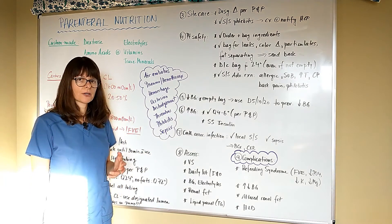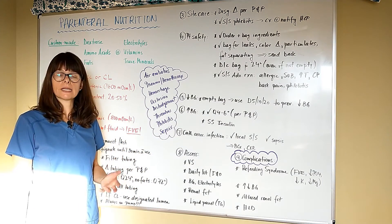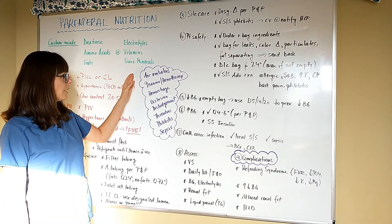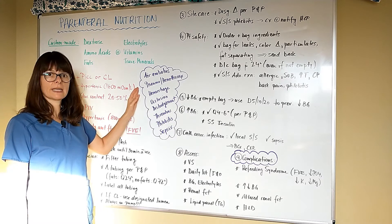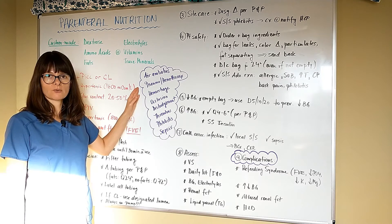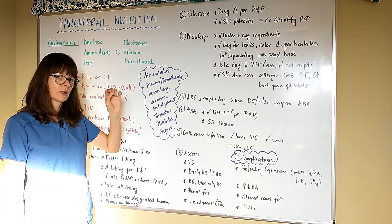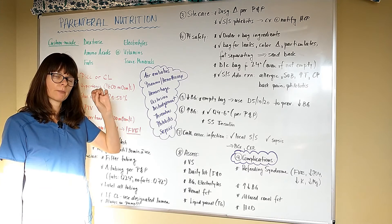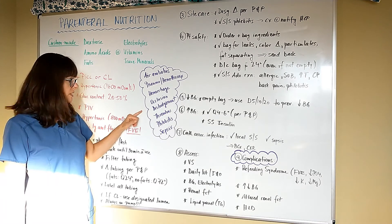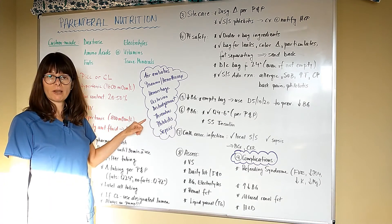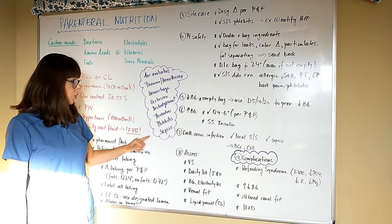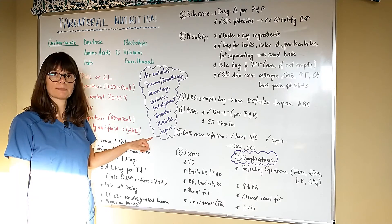Any other catheter or central line associated complications are right here in purple. These can be an air embolus, a pneumothorax or a hemothorax. That is basically mostly when the central line is being inserted and the lung is punctured or a blood vessel is punctured. It can be hemorrhage, the central line can be occluded or dislodged. It can develop a thrombus. It can develop phlebitis, like we already talked about, or it can lead to sepsis.